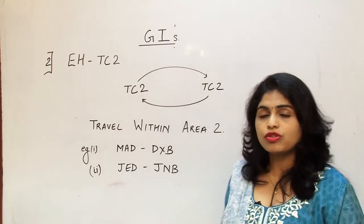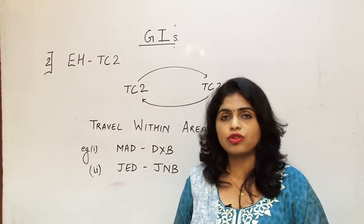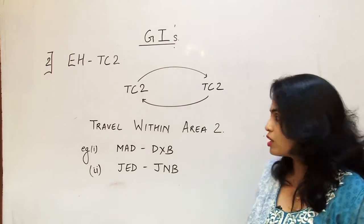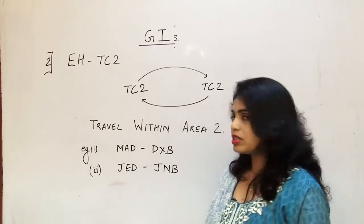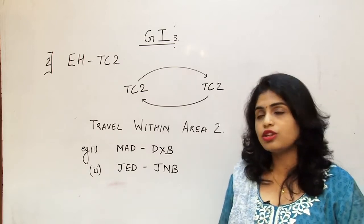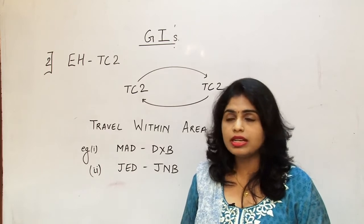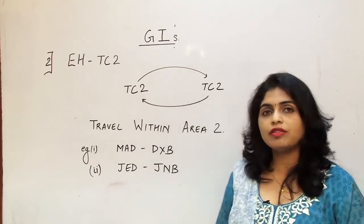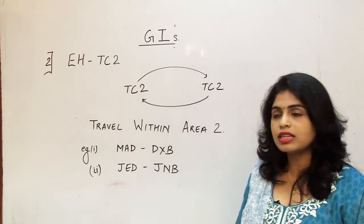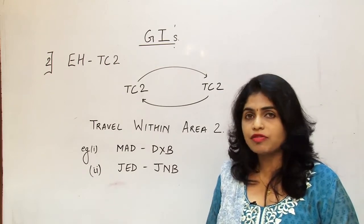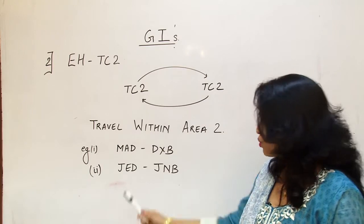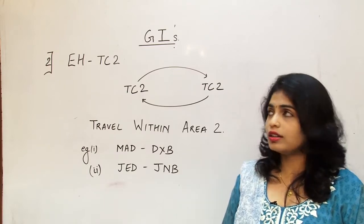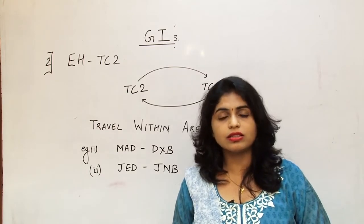If the flight is not leaving traffic conference area 2 and it is roaming only in traffic conference area 2 countries, then we say that the global indicator routing is EH, that is Eastern Hemisphere. We have an example here: MAD, that is Madrid in Spain which is in Europe and area 2, to Dubai which is in UAE Middle East, that is again in area 2. So here the flight is not leaving area 2. Then again we have Jeddah which is in Saudi Arabia Middle East, and Johannesburg which is in South Africa, Africa, which is again in area 2. So here again the flight does not leave area 2. Clearly for both these examples the global indicator is Eastern Hemisphere, denoted by the letters EH.